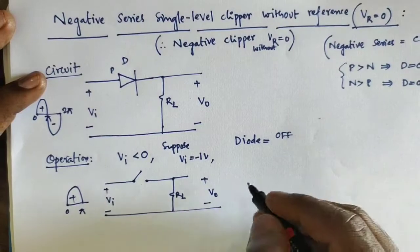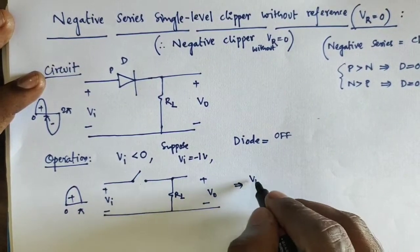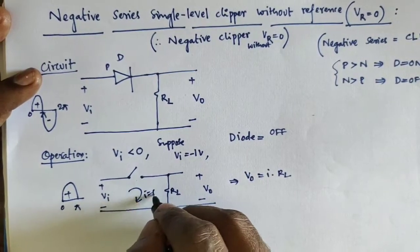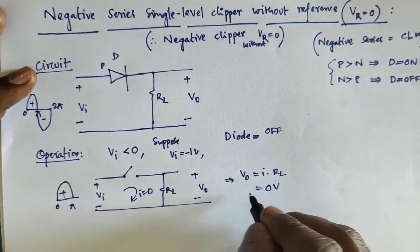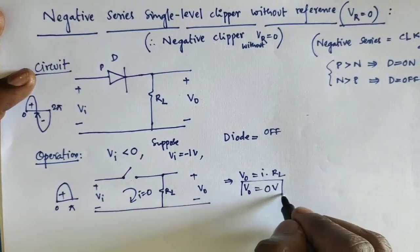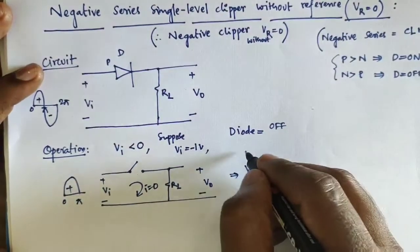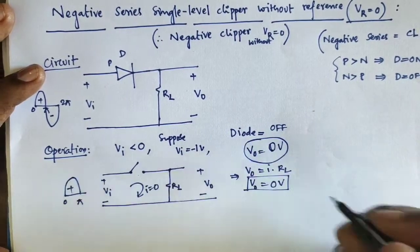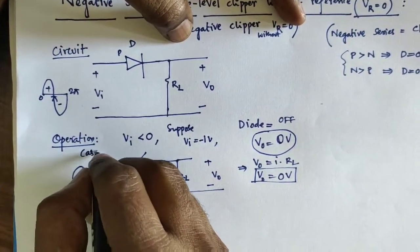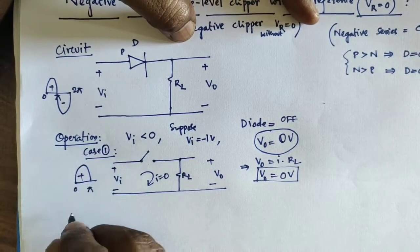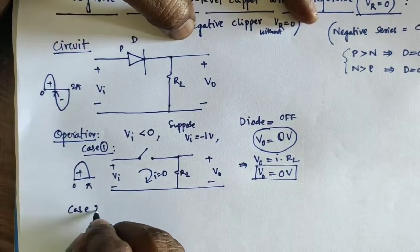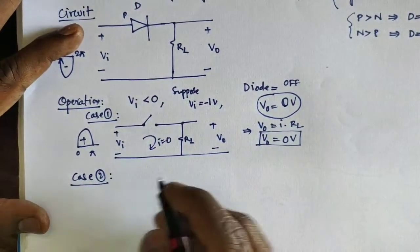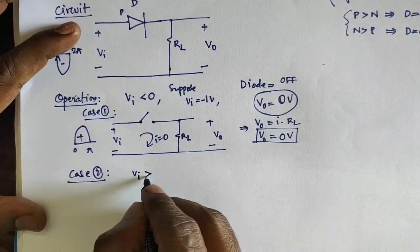From 0 to pi, all values are positive. Then V0 is equal to I multiplied by RL, where I is equal to 0. So finally V0 is equal to 0. At the output stage, V0 is equal to 0.